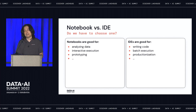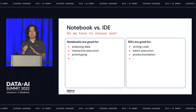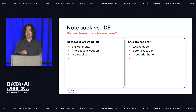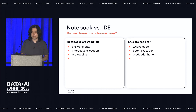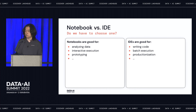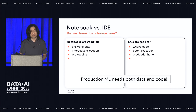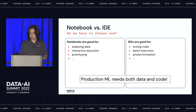Then there's the popular debate between notebooks and IDEs. A lot of people love notebooks, and a lot of people say IDE is the way to go, especially for machine learning production. But notebooks have good things — otherwise there wouldn't be this debate. The first is analyzing data and interactive execution — you want to check the output and think about the next command. IDEs are good for building things up and writing code. But do we have to choose one in our solution? We know that production machine learning needs both data and code. That helps us think about how to design our solution.